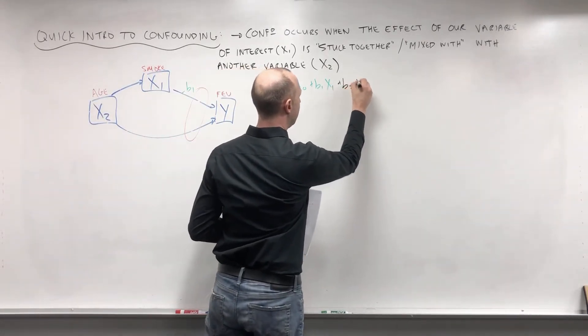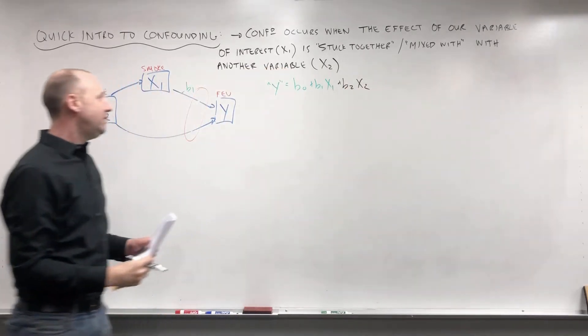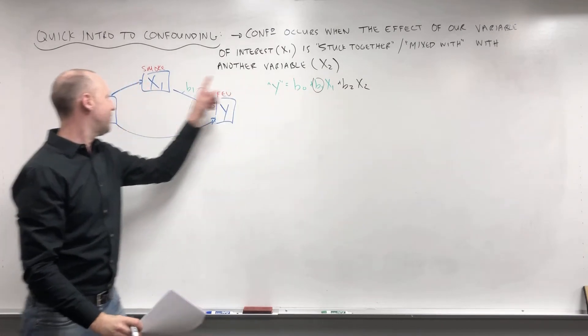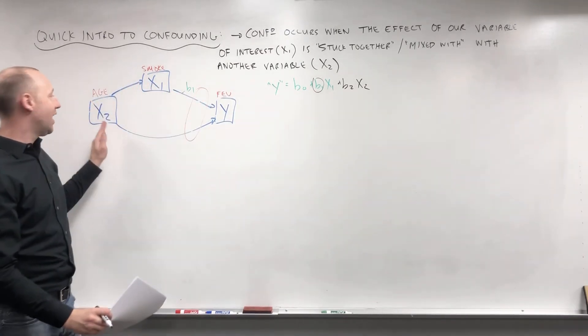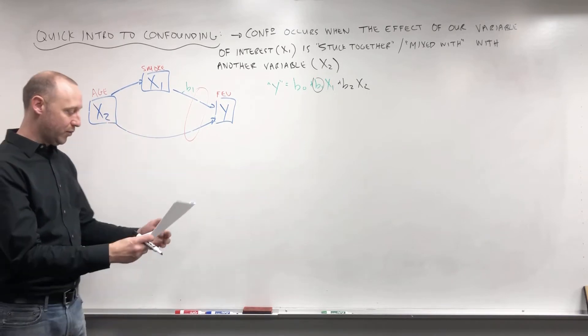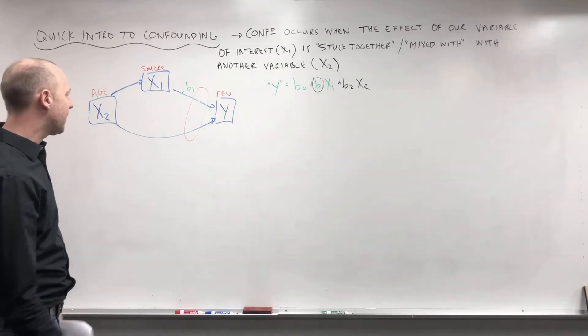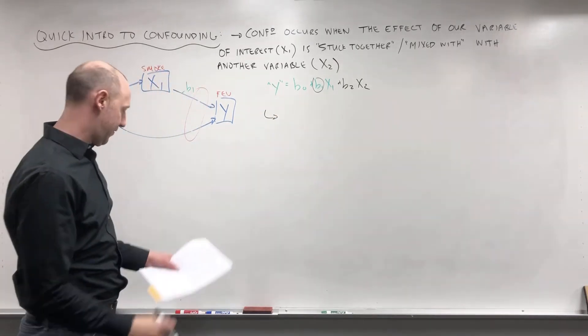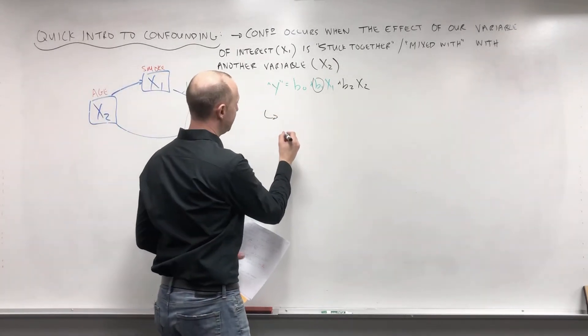When we include age in the model, when we include this other variable in the model, then this coefficient here, B1, gives us what's the effect of smoking on FEV adjusting for age—or comparing the smoking effect for two people who are the same age.